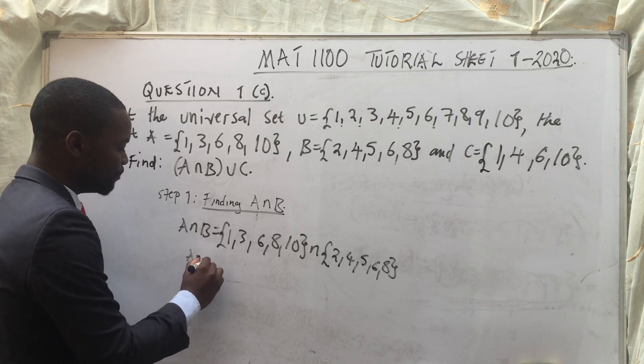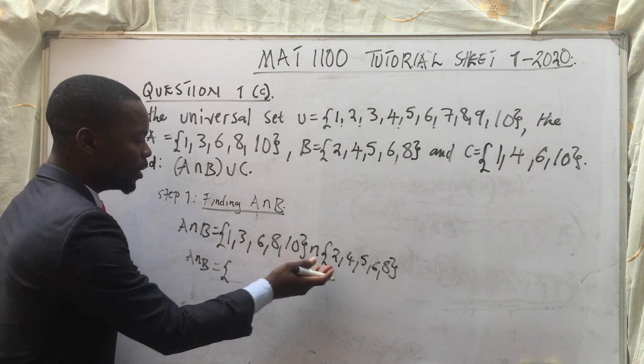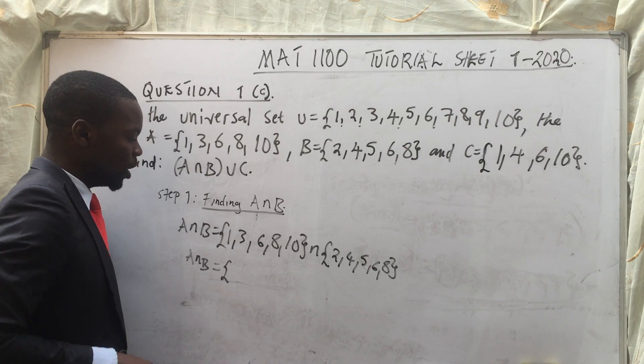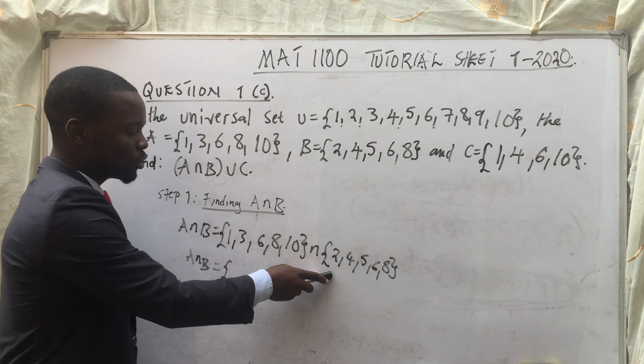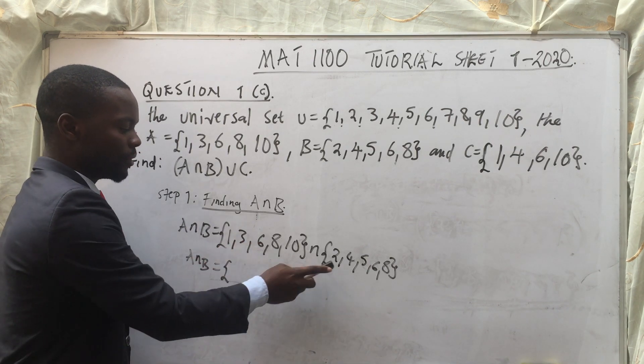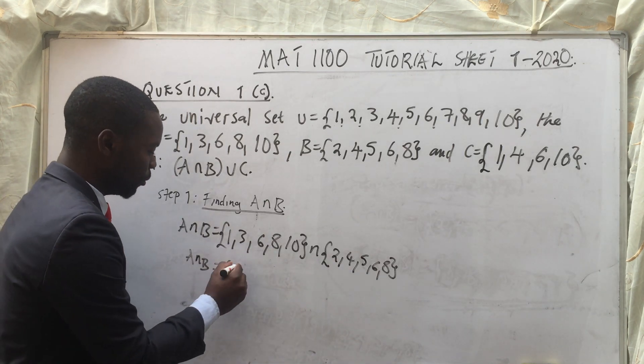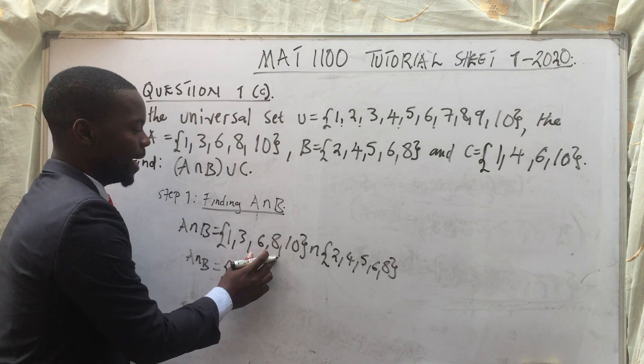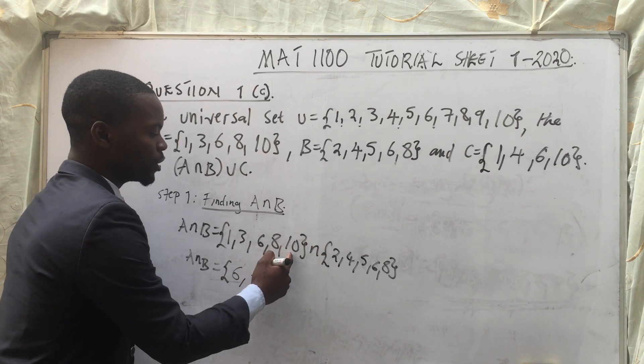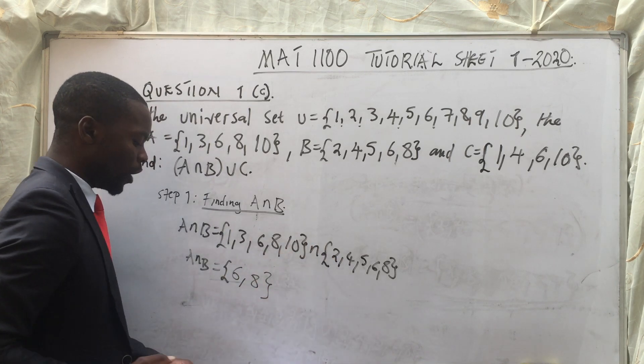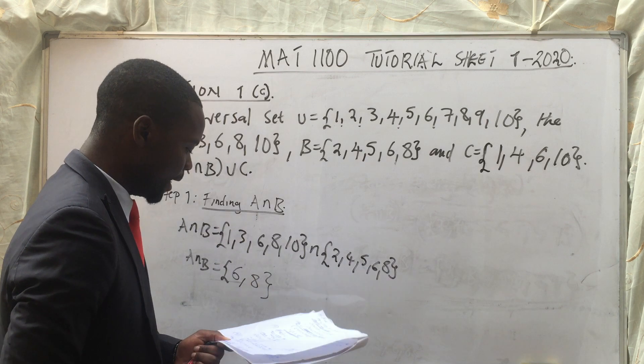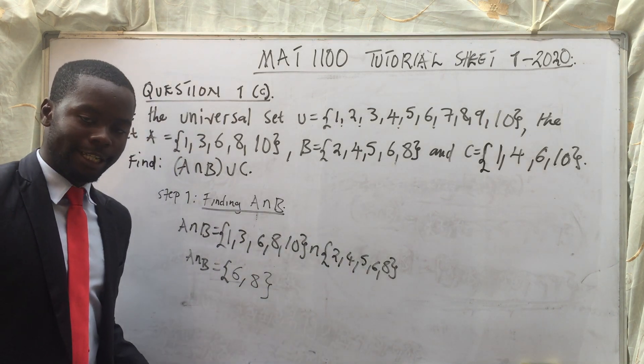So now A intersection B is equal to the common elements. So here we have got 1, we don't have 1. So 1 is not part of our answer. We have got 3, we don't have 3. We have got 6, we have 6 here. So we write 6. We have got 8, we have 8 there. We have got 10, we don't have 10 there. So A intersection B is 6, 8 only.